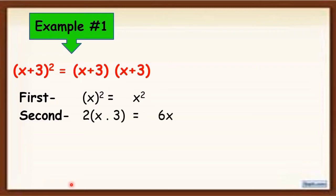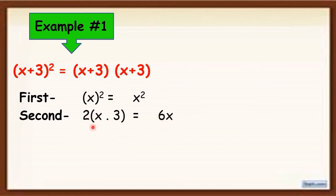Next is twice the product of the terms of the binomial — twice means 2. The product of the terms of the binomial: you are going to multiply x and 3. That's why we have 2 times (x times 3). If we simplify it, the answer will be 6x. Because x times 3 is equal to 3x, and 3x times 2 is equal to 6x. You simplify first the operation inside the parenthesis.